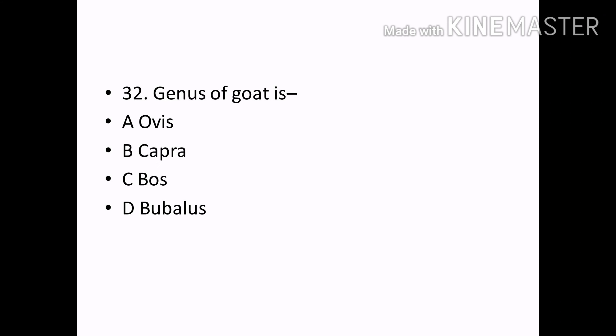The genus of Goat is: Options — Ovis, Capra, Bos, Bibales. Correct answer: Option B — Capra.